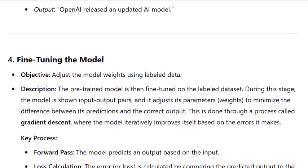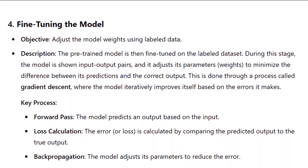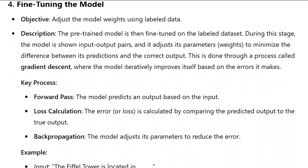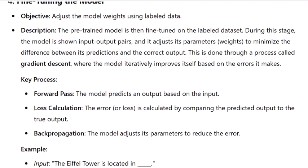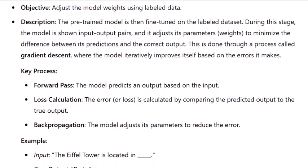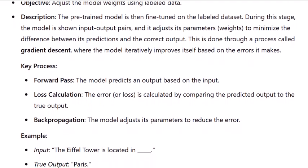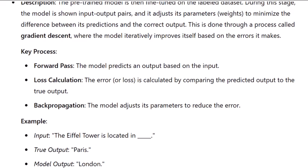Step four: fine-tuning the model. Objective: adjust the model weights using labeled data. The pre-trained model is then fine-tuned on the labeled dataset. During this stage, the model is shown input-output pairs and it adjusts its parameters, or weights, to minimize the difference between its predictions and the correct output. This is done through a process called gradient descent, where the model iteratively improves itself based on the errors it makes.